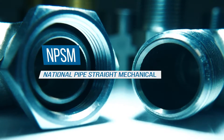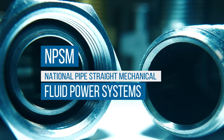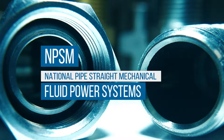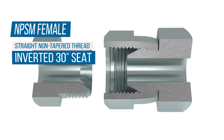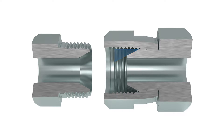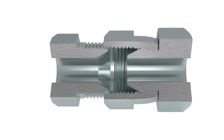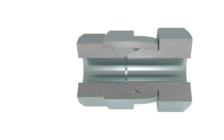NPSM, or National Pipe Straight Mechanical threads, are also often found in fluid power systems. The female component incorporates a straight, non-tapered thread with an inverted 30-degree seat. A seal is made by compression of the 30-degree chamfer of the male connector on the seat of the female. This is a mechanical seal.